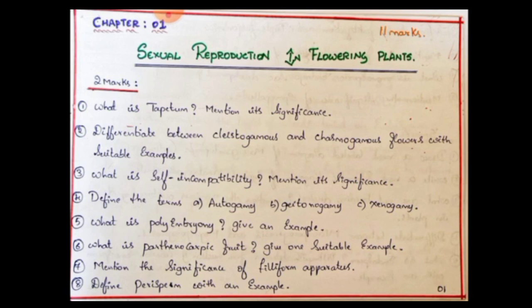Two-mark questions are not directly tested but I have to cover them. When you prepare two-mark answers, it helps with three-mark questions. One question is for two marks, and one question is for five marks in this chapter. In the two-mark section, the expected questions include: What is Tapetum? Mention its significance. Differentiate between cleistogamous and chasmogamous flowers with suitable examples. What is self-incompatibility? Mention its significance. Then define the terms.